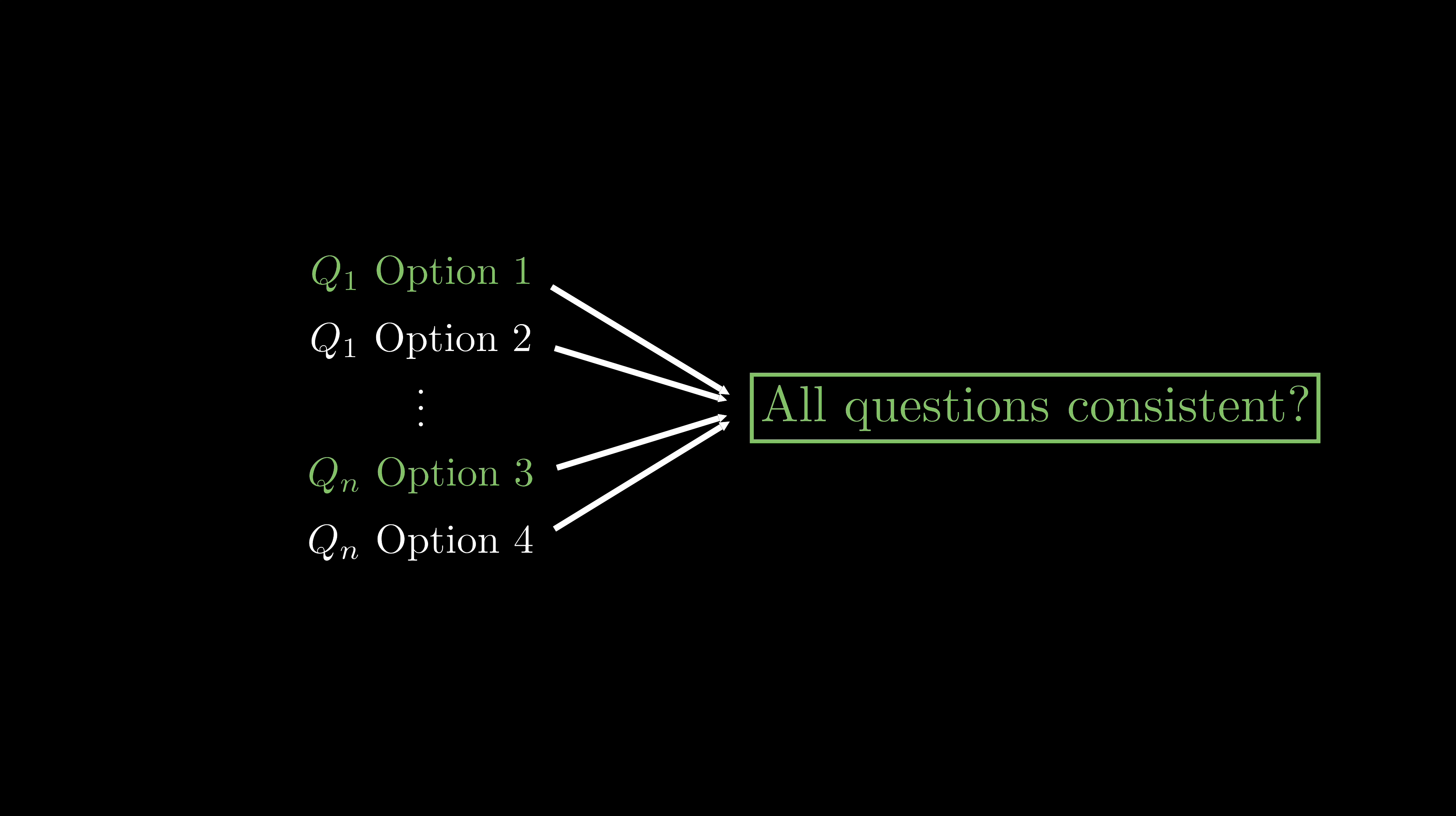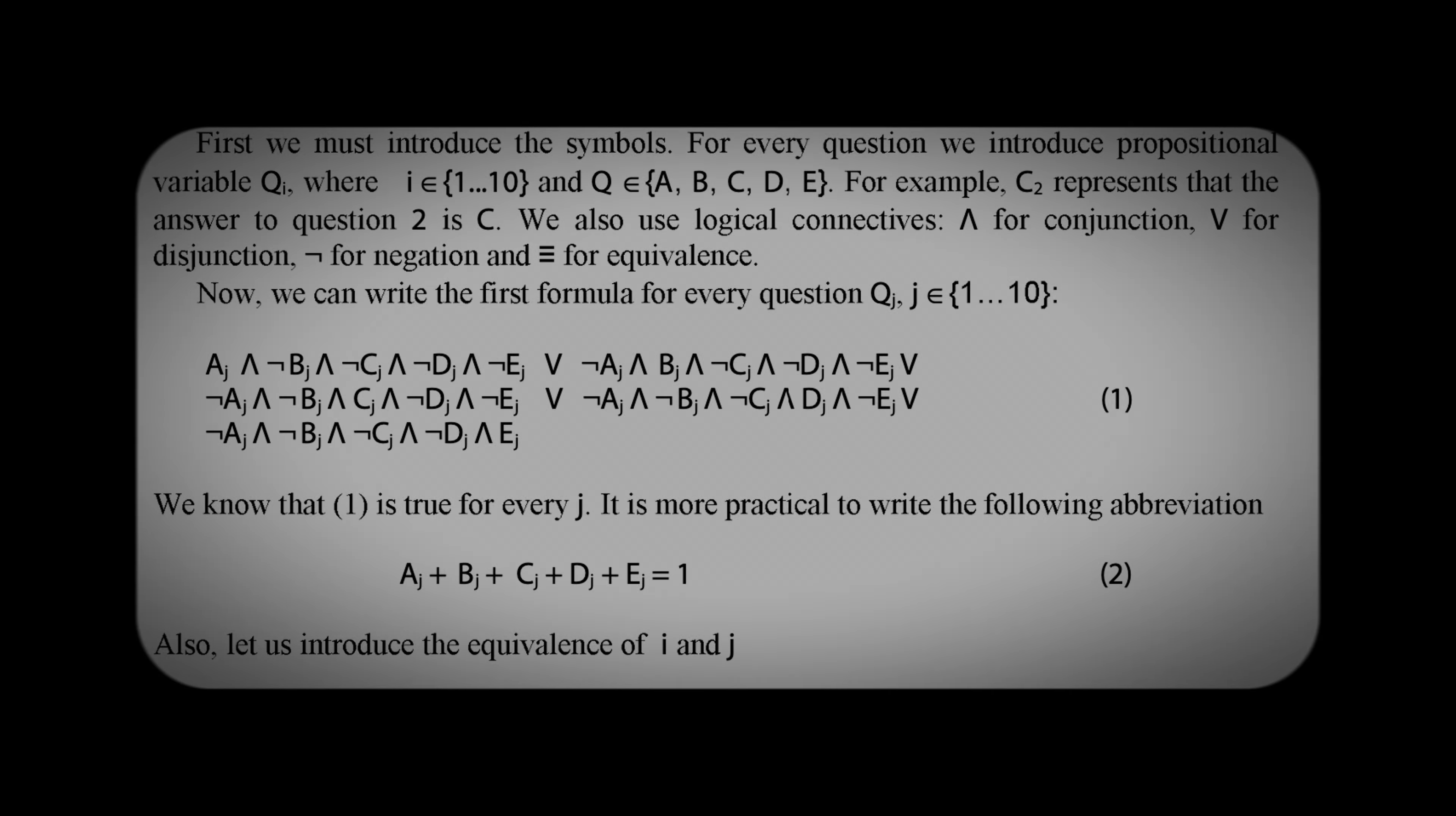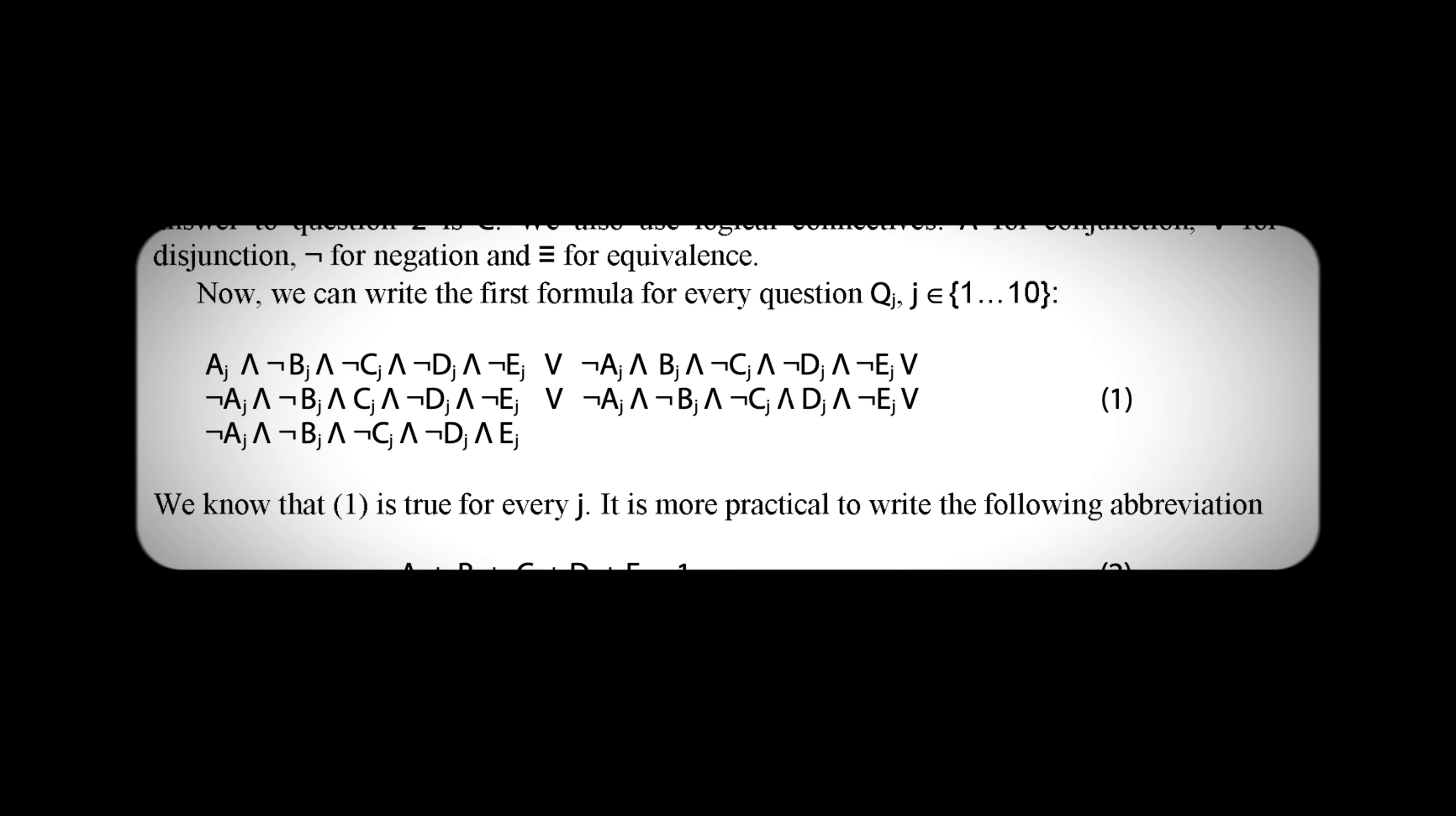You may ask, how do we restrict that only one option of a question's options is correct? Well, that is also a clause. I linked a paper in the description, and you can see the first formula in the paper basically says for each question, one of the options A, B, C, D, E must be true.